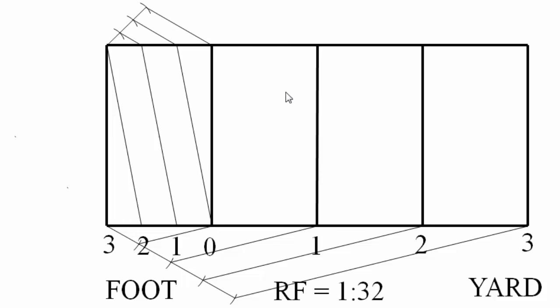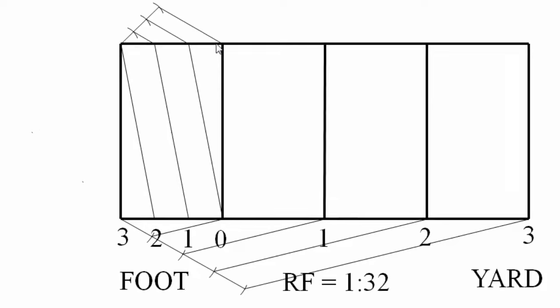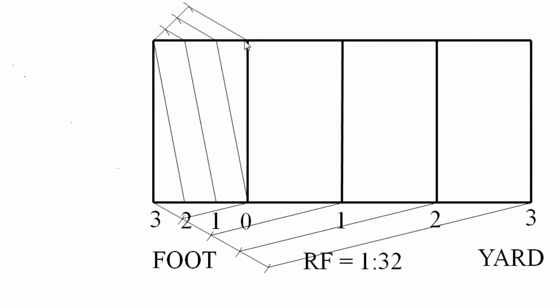The issue now is how to represent inches. You might wonder why the diagonal was drawn — I'll explain shortly. One foot equals 12 inches, so to get one-inch divisions, this portion needs to be divided into 12 equal parts. But this small portion cannot visually be divided into 12 parts directly.